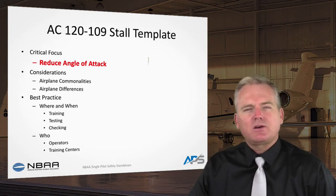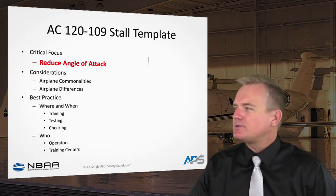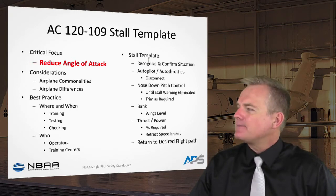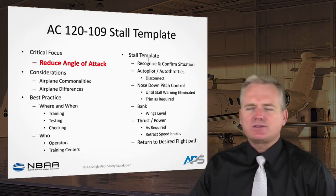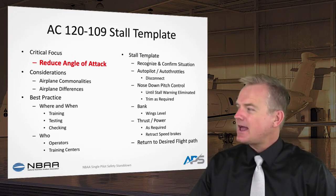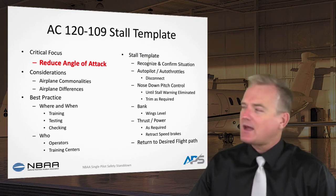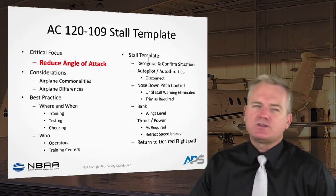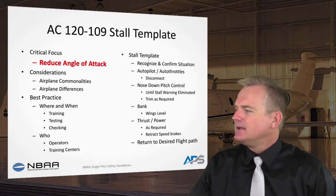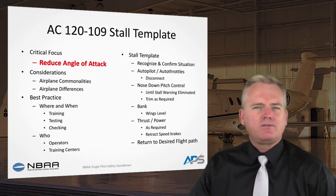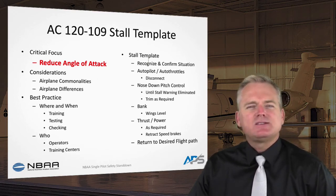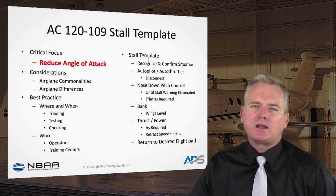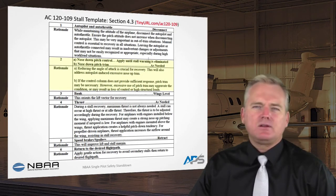The template considers airplane commonalities and differences, identifies best practices, and specifies where, when, and who should apply them. If you're conducting approach-to-stall or full stall training, it must comply with AC 120-109A. The template process addresses: recognizing and confirming the situation, disconnecting the autopilot and autothrottles, applying nose-down pitch control to reduce angle of attack until stall warning is eliminated, using trim to support that action, then reducing bank angle, adjusting thrust, managing speed brakes, and returning to the desired flight path.